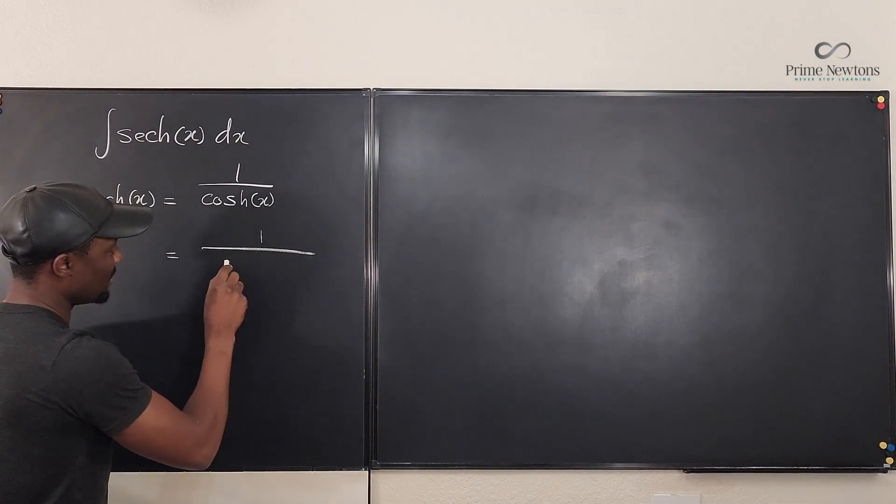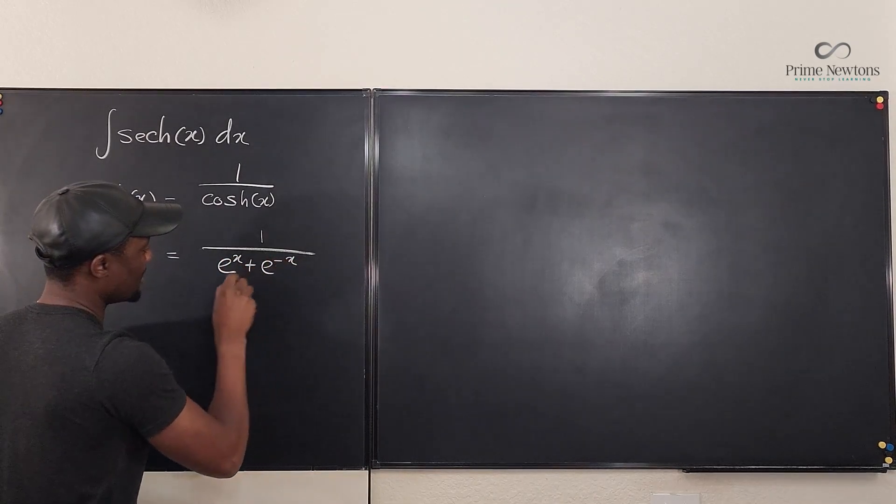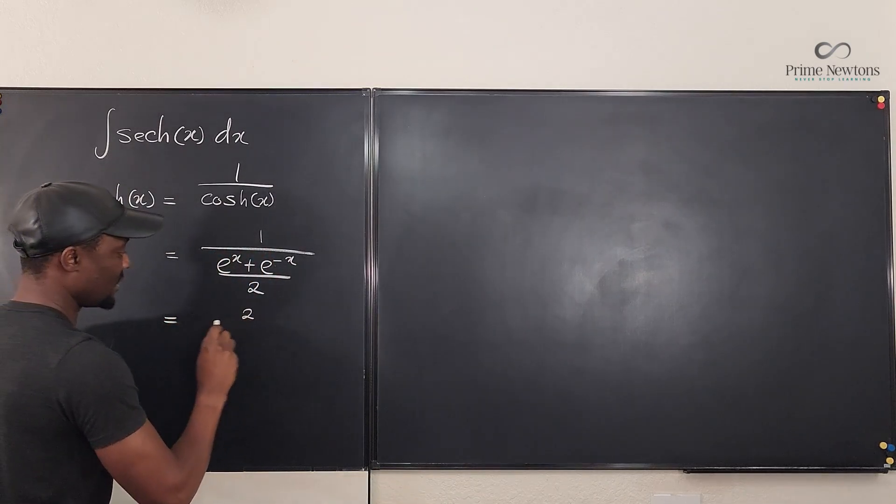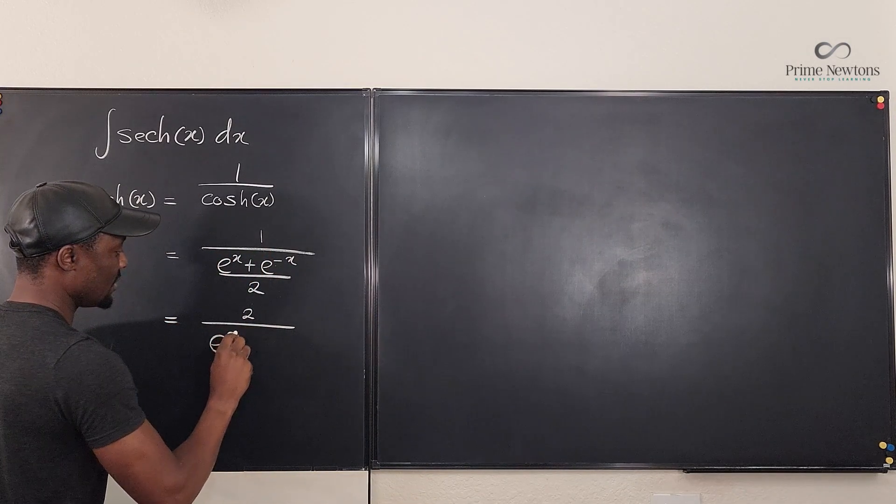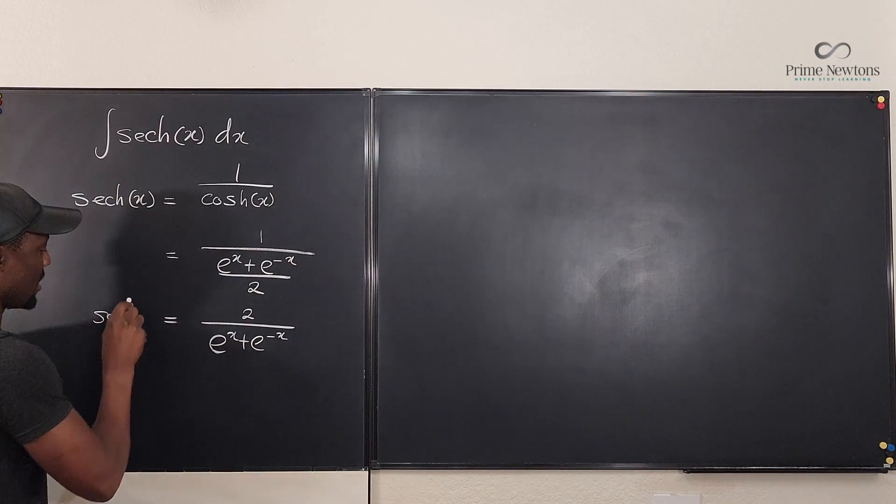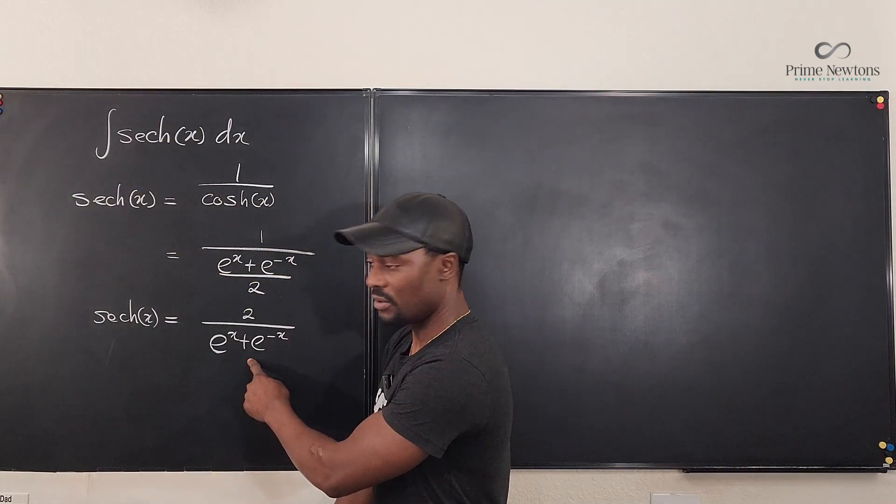It's going to be e to the x plus e to the negative x divided by 2. And I know that if I flip this, it's going to be 2 over e to the x plus e to the negative x. That is this. So if I'm asked to take this integral, I shouldn't have a problem with this.